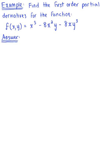Find the first order partial derivatives for the function f(x, y) = x³ - 8x²y - 8xy³. Looking at the function, we see we have two independent variables, so we are going to have two first order partial derivatives.